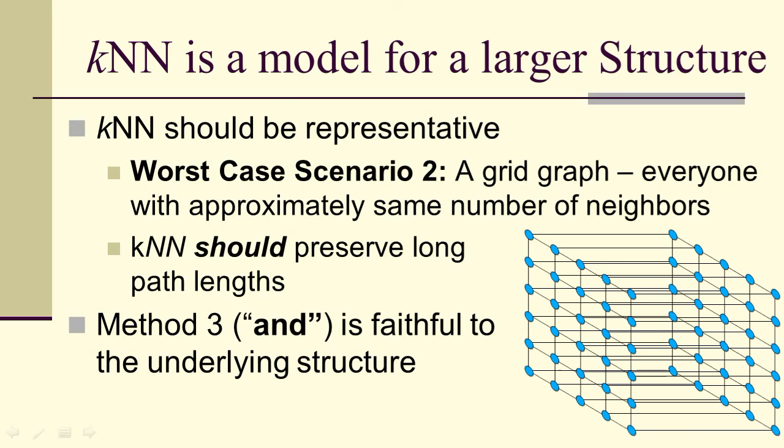Because method three, with the AND option, is faithful to the underlying structure of the grid graph and the complete graph, and in general, the data that we're looking at. So we're not going to use methods one and two—collapse the undirected or use the OR option. We're going to have an upper bound of K when we do the undirected graph representation of K nearest neighbors.